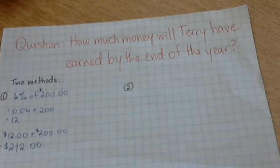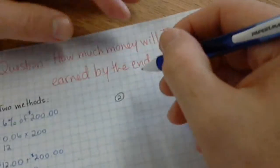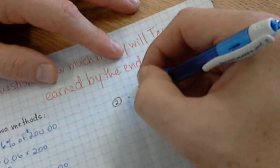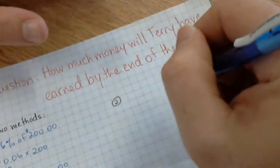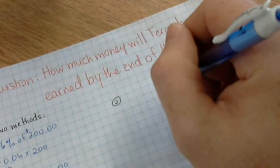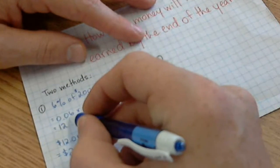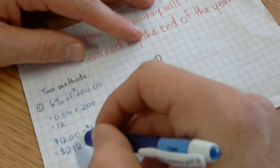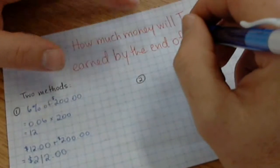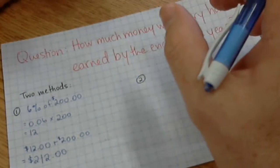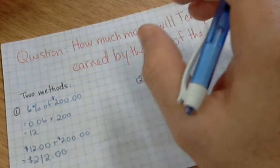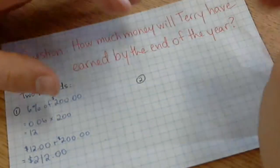The second method that I want to show you is this: we're going to imagine for a second that we want to try and make this process a lot simpler. Rather than figuring out what 6% of 200 is and then adding that on, we're going to pick a percentage that's going to include the $200 plus the 6%.